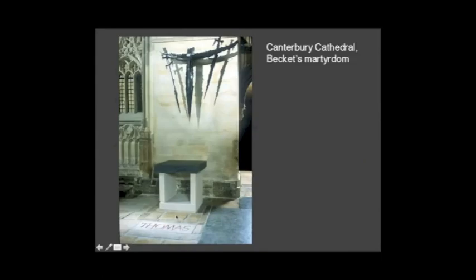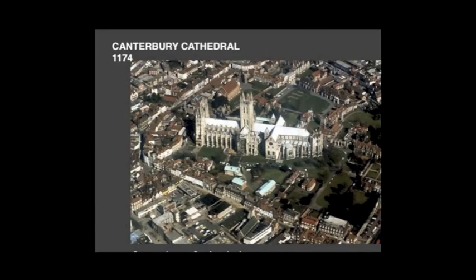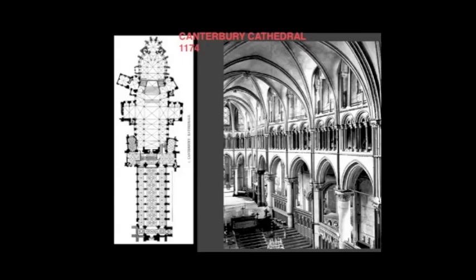Like the French Gothic churches, English Gothic churches operate at a scale completely different from the scale of the cities around them. But the interior space is much lower. There is less desire — or less technical capacity — for the extreme thinness and extreme verticality that we get in the French examples.